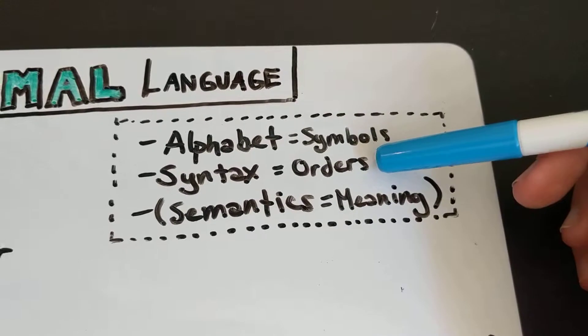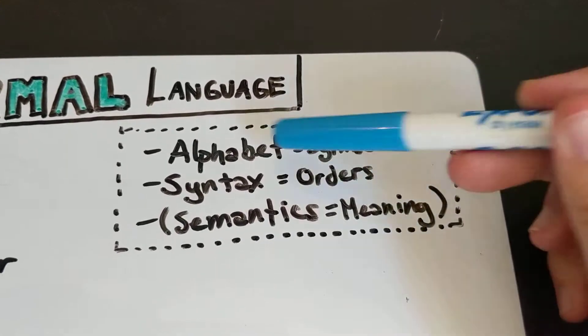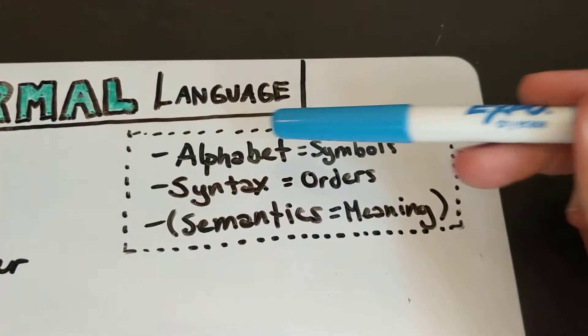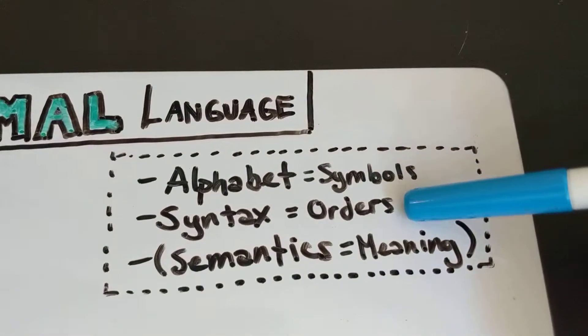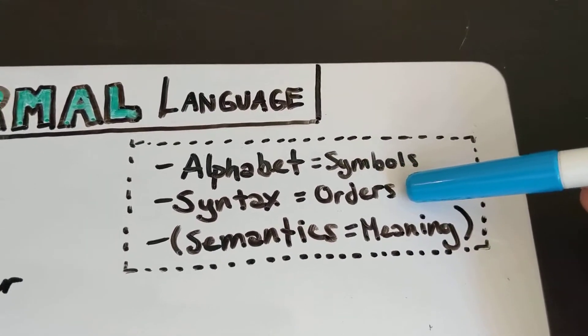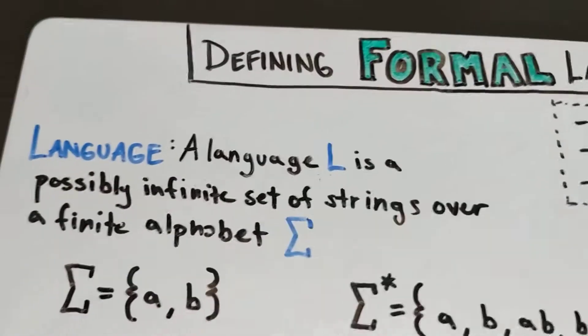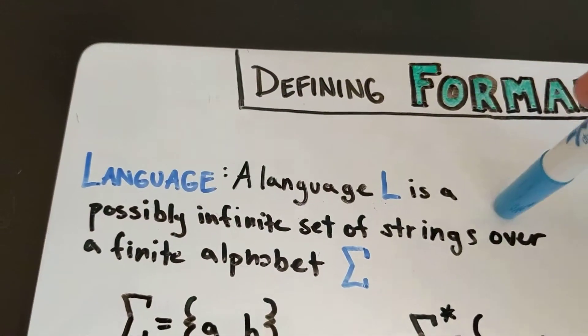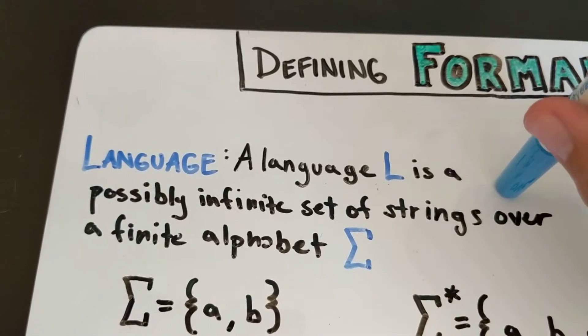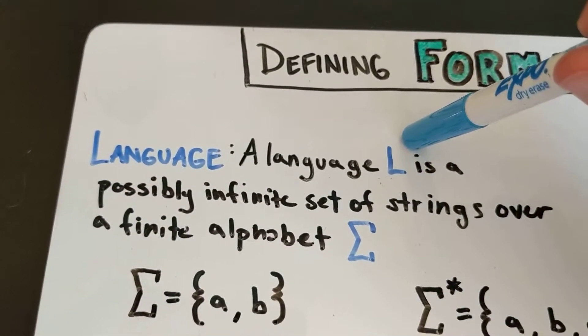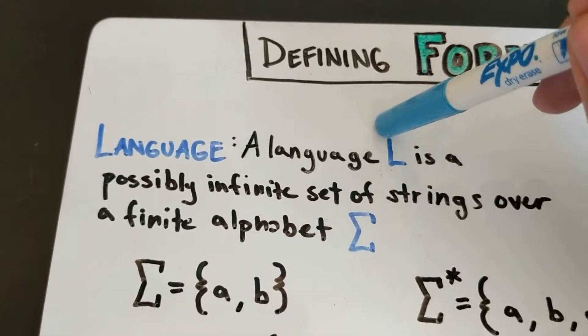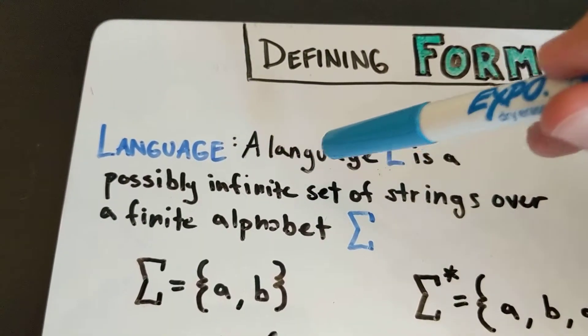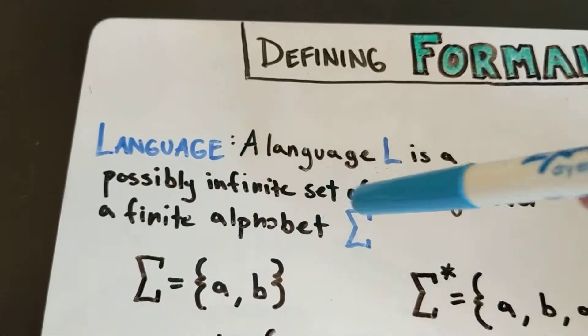And we're especially going to delve into the different types of syntaxes that you can have for a language. We're going to talk about this in slightly different terms in this unit. So broadly speaking, in formal language theory, we define a language which we usually give the name L, a capital letter L.